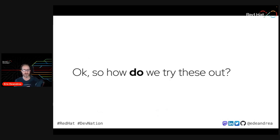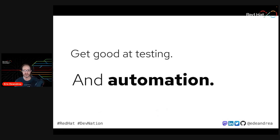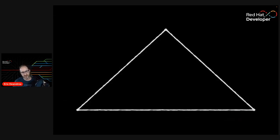We have a paradox: we have to try these things out, but trying them is hard and expensive. So with microservices, you need to get really good at testing — writing unit tests, executing them, and having a process to fix defects rather than pushing them to the next sprint. You also need to get really good at automation: automated deployments, rollbacks, CI/CD, code quality, and all the good stuff that came with the DevOps revolution of the last ten years or so.